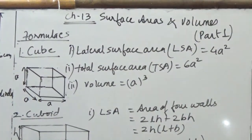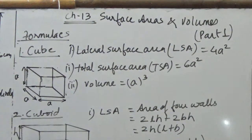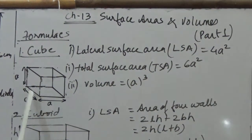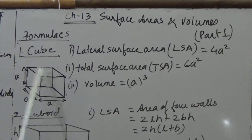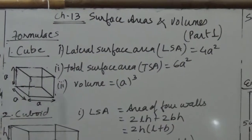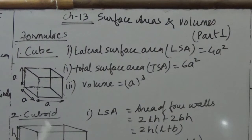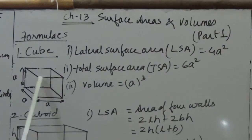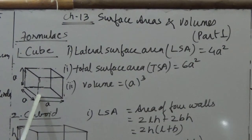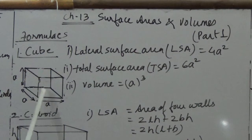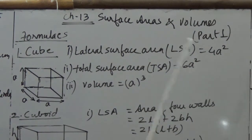First is the formula of a cube. The lateral surface area means the area of 4 walls. A cube's face is a square, and the area of a square is A². Since there are 4 walls, the lateral surface area of a cube is 4A².